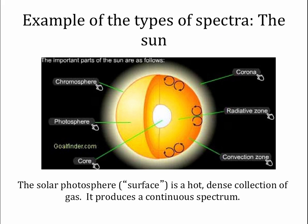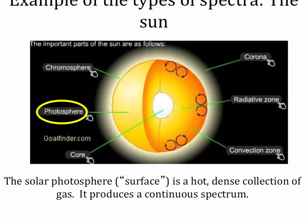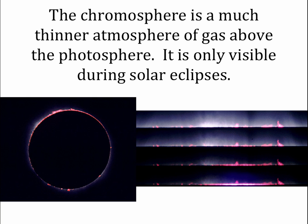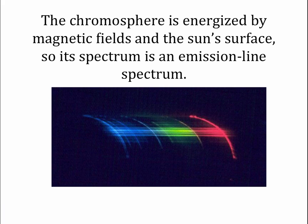The sun provides an example of all three types of spectrum. The important part of the sun for our purposes is the photosphere — the top layer of the sun, which we often can think of as the surface. The photosphere of the sun is a very hot, very dense plasma, and so you would expect that it should produce a continuous spectrum, and in fact it does. Above the photosphere is another part of the sun called the chromosphere, which is like the atmosphere of the sun. It's a thin gas that sits above the photosphere and can only be seen during a total solar eclipse. The chromosphere is energized by magnetic fields, by solar flares, and by the sun's surface, and if we look at its spectrum during a total eclipse, we see an emission line spectrum.